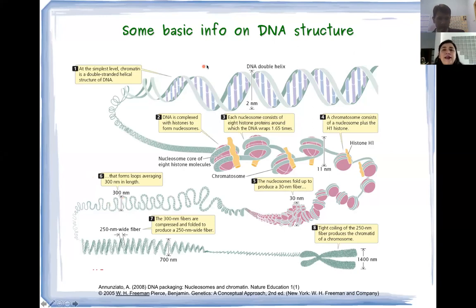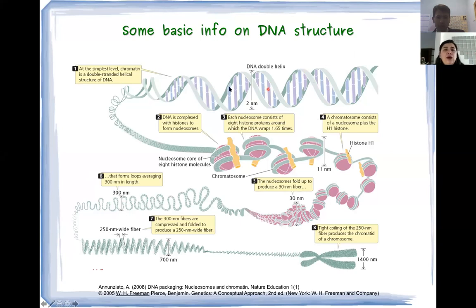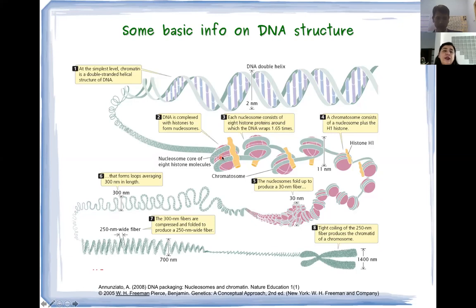The DNA structure of the double helix is perhaps the only molecule whose structure is known by everybody. It is the elegant shape of the double helix, which in our cell wraps around some proteins called histones, forming a complex that is called the nucleosome core particle. The disc around which DNA wraps forms the NCP, the nucleosome core particle.